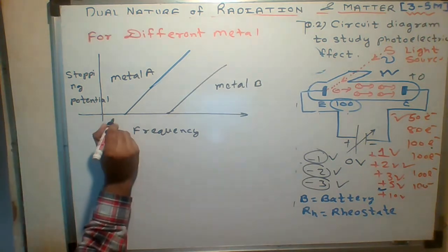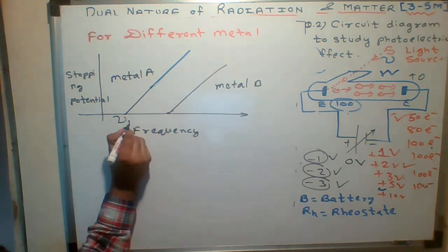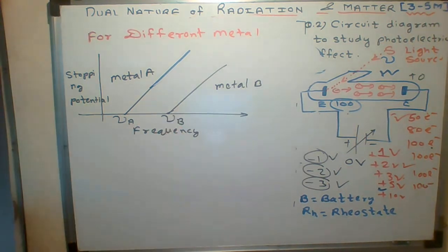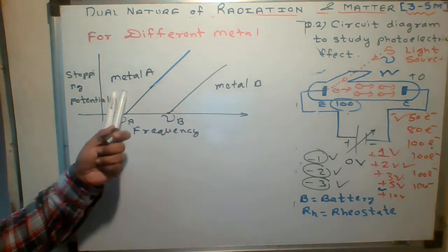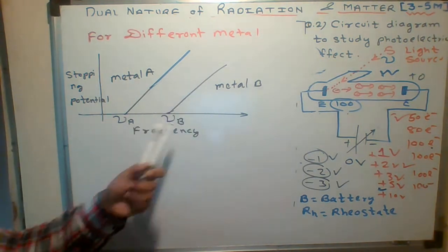That metal will tell the light you should have some frequency. So suppose this is the threshold frequency for metal A, and this is the threshold frequency for metal B. When we use different metals, the frequency will also vary.